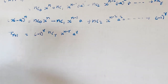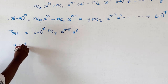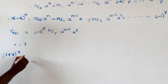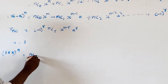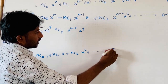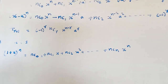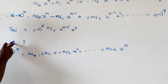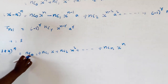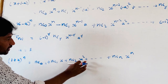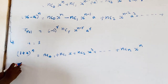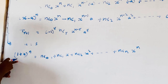Now replacing a equal to 1 in equation 1, we get the expansion of (1 + x)^n. That is equal to NC0 plus NC1·x plus NC2·x^2 plus NC3·x^3 and so on, NCN·x^n. This is called the standard form of the binomial expansion.